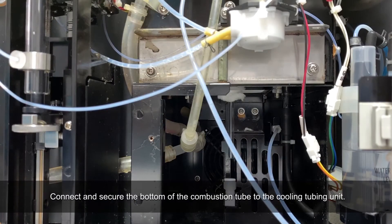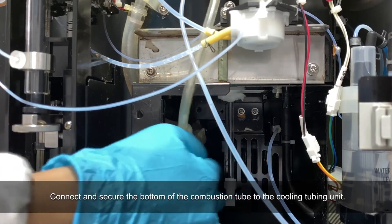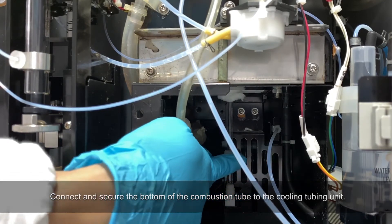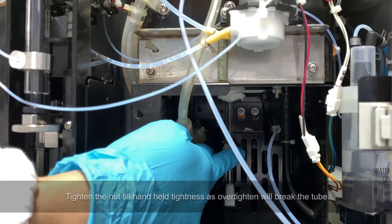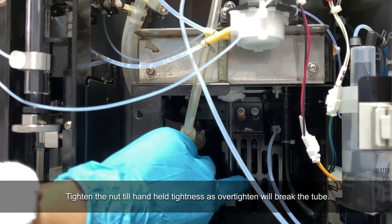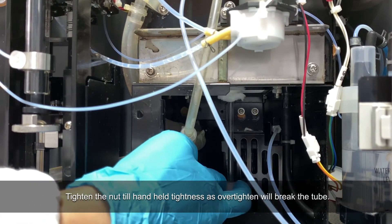Connect and secure the bottom of the combustion tube to the cooling tubing unit. Tighten the nut to hand-tight tightness, as over-tightening will break the tube.